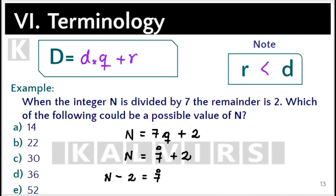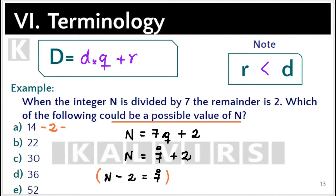This means that n is a multiple of 7 plus 2, therefore n minus 2 is always a multiple of 7. We need to find a possible value of n, so we start testing the choices. If n is 14, then 14 minus 2 must be a multiple of 7. 14 minus 2 is 12, and 12 is not a multiple of 7, so choice A is discarded.